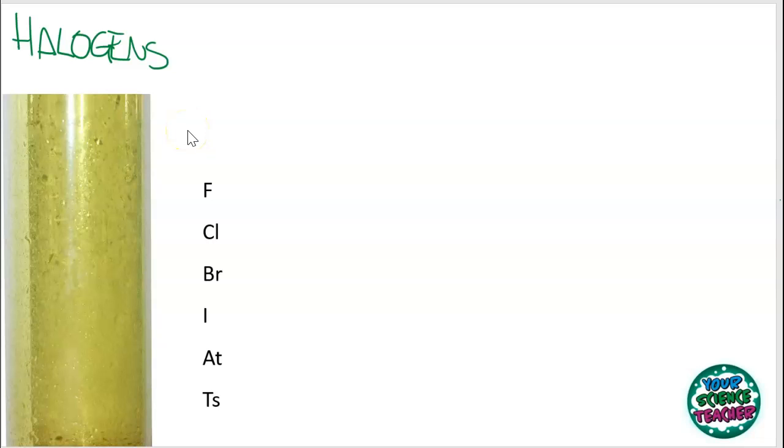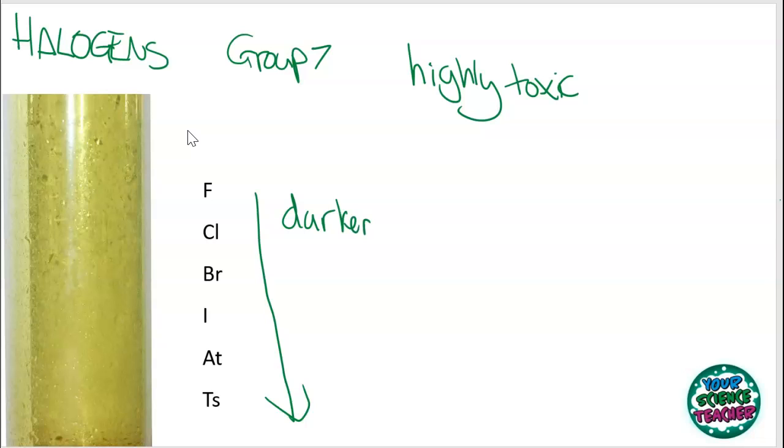The next group to look at is perhaps my favourite group in the periodic table. It's group 7, the halogens. The halogens are very interesting. They're often highly toxic. They also have distinct colours. They get a lot darker as you go down the group. So you start off with fluorine, which is a pale yellow gas. And you get chlorine, which is in this test tube here, which is green. You've got bromine, which is kind of like an orangey brown liquid. You've got iodine, which is a brown solid. And then you get astatine, which is almost black. So they get dark down the group.